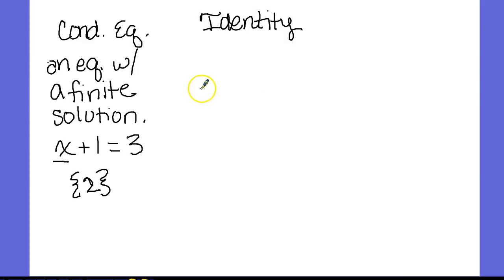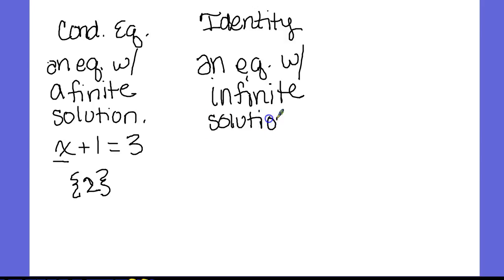The next one is the identity equation. What is an identity? So that was the first part. A conditional had one solution. Actually, a conditional is an equation with a finite solution. An identity is an equation with infinite solutions. Let me give you an example. What if I said this? So here's an example of an identity equation: 3x + 9 = 3(x + 3).